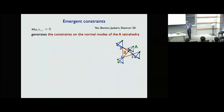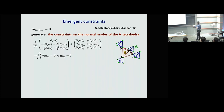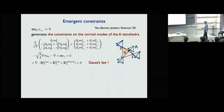When removing a mode from the B-tetrahedra, there is an immediate consequence: constraints are imposed on the normal modes of the four nearby A-tetrahedra. They are not independent — they are all connected. This generates constraints on the A-tetrahedron normal modes, and going to the continuum limit, since these constraints act on four separated tetrahedra, a gradient operator appears. One can derive a constraint equation on the normal modes, which can be written as a Gauss law.